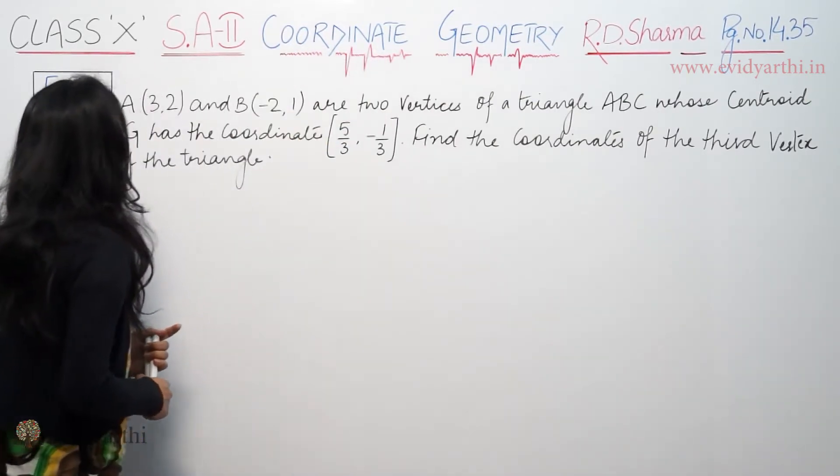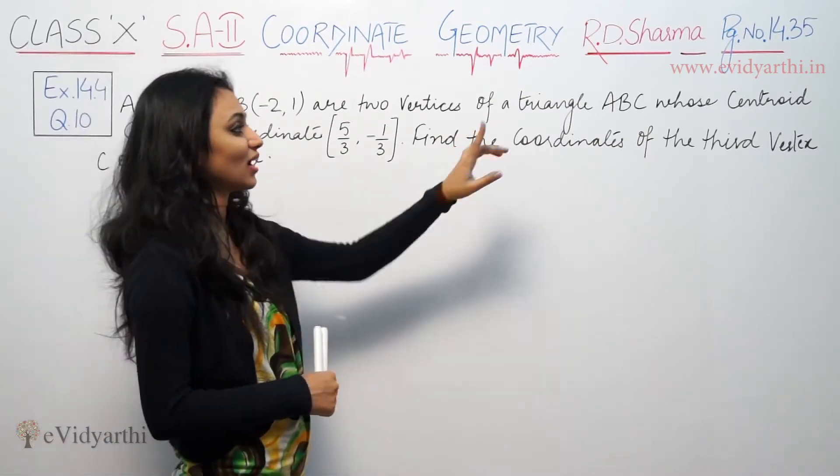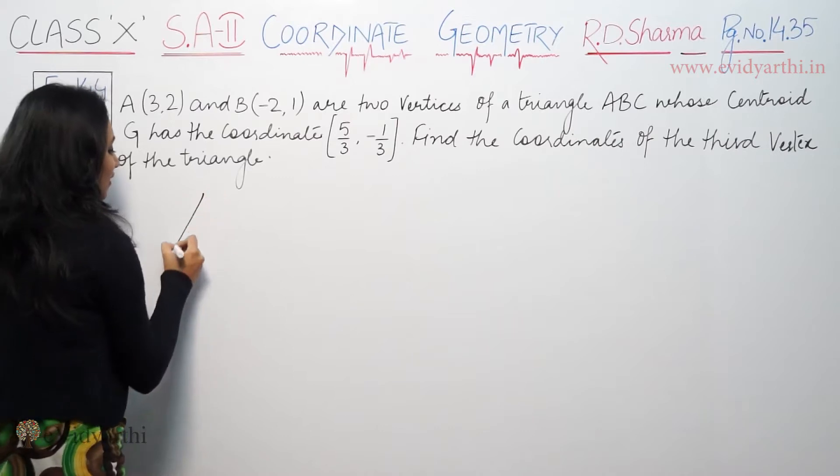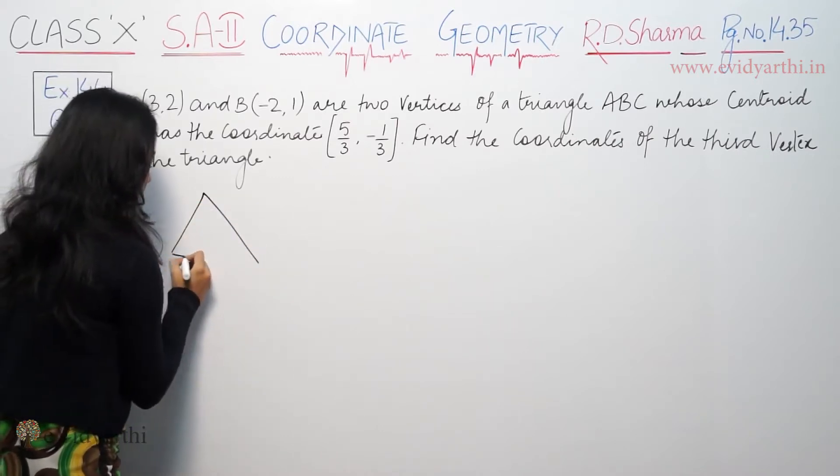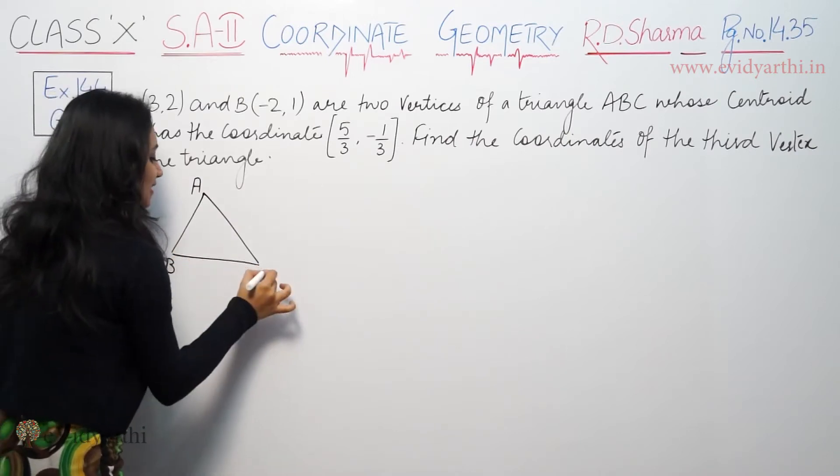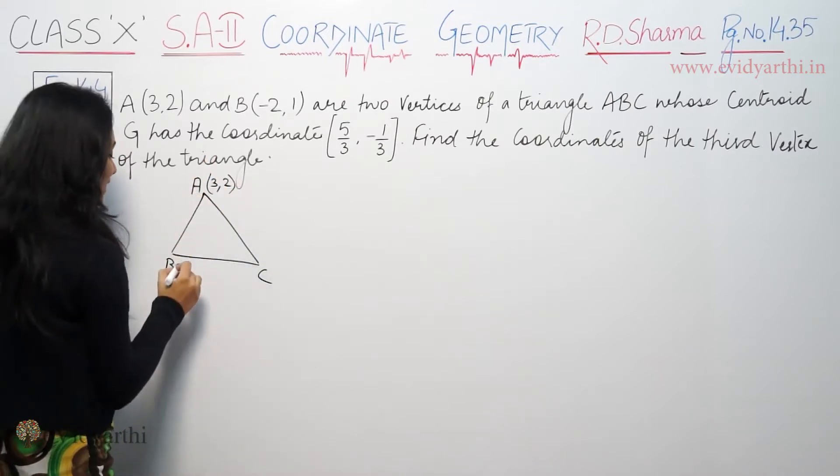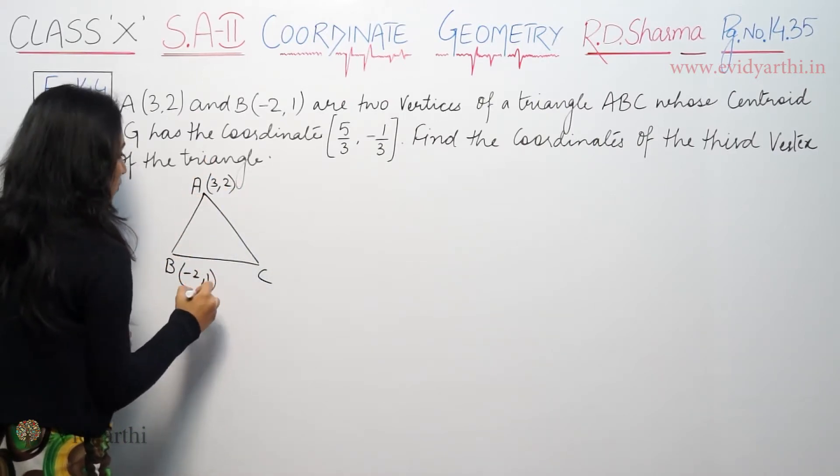The question is: if A(3,2) and B(-2,1) are two vertices of a triangle ABC. This is A, this is B, this is C. A's vertices are 3 and 2. B's vertices are minus 2 and 1.